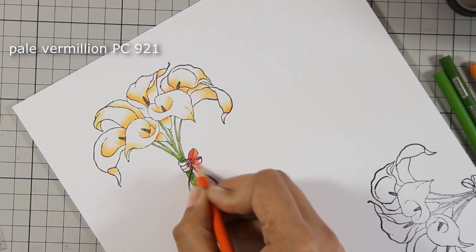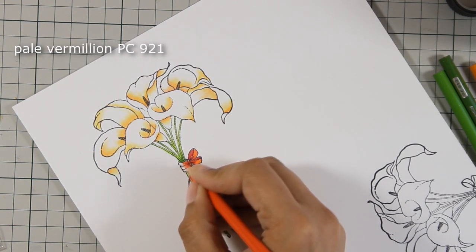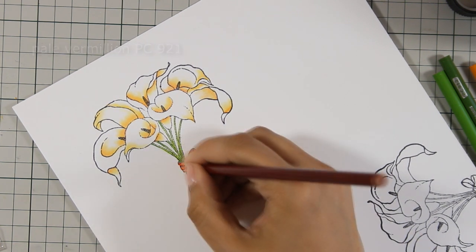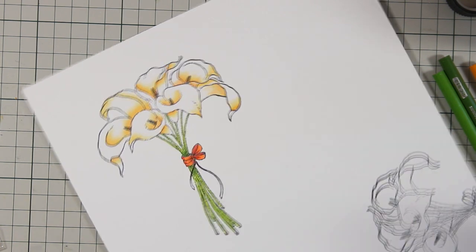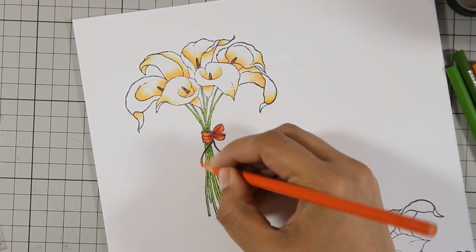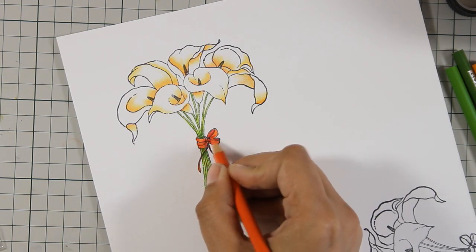For the flower stems I did not do any type of blending - I just used two different colors of green since they are so thin. And I am doing the same thing for the bow, just using two different shades of red.